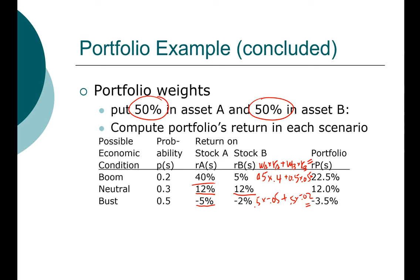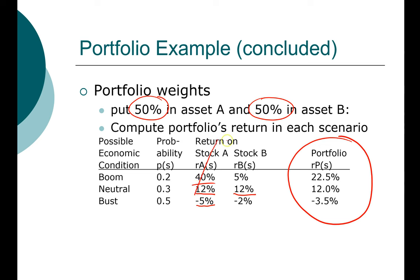Once we have computed our portfolio return for each scenario, the rest of the calculation is straightforward. We can ignore the underlying individual stocks and just focus on the portfolio returns. Think of it like buying a mutual fund — the fund only reports the overall portfolio return, not each individual stock. So we focus on the probability of each event and how it impacts the portfolio: a 20% chance of 22.5%, a 30% chance of 12%, and a 50% chance of losing 3.5%.